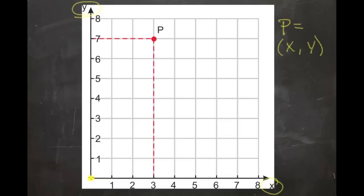For point P here, we move over 1, 2, 3 places, so our x-coordinate is 3. Then we move up 1, 2, 3, 4, 5, 6, 7 places, so our y-coordinate is 7. Point P is at (3, 7).